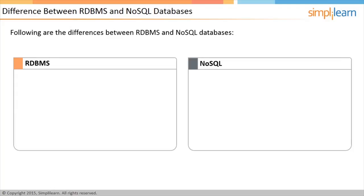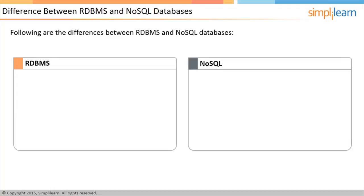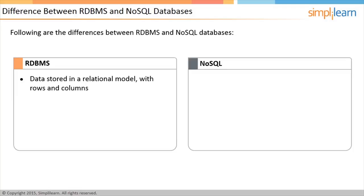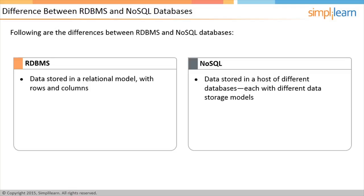NoSQL differs from RDBMS in terms of the following features. In RDBMS, data is stored in a relational model in tabular format with numerous rows and columns. Rows contain information about an item type, and columns contain various values attributed to the item — for example, model, date of manufacture, color, and so on. NoSQL comprises a host of different databases with different data storage models.